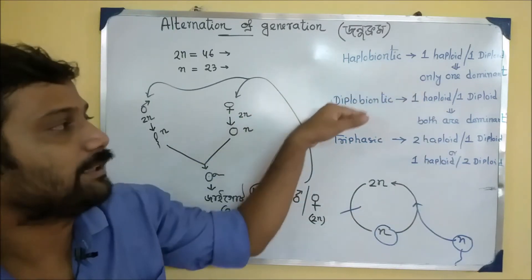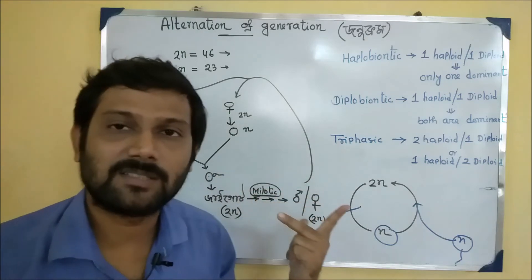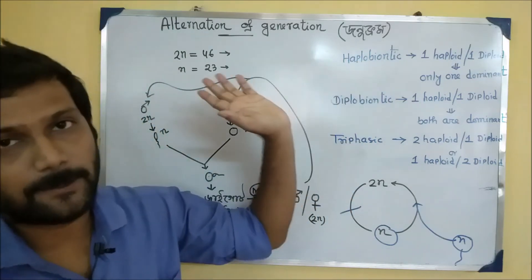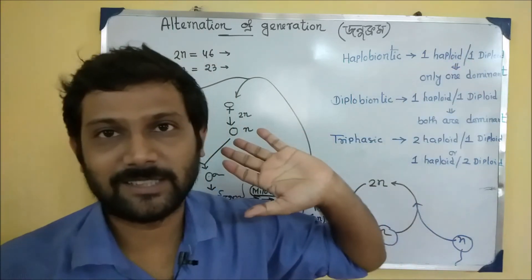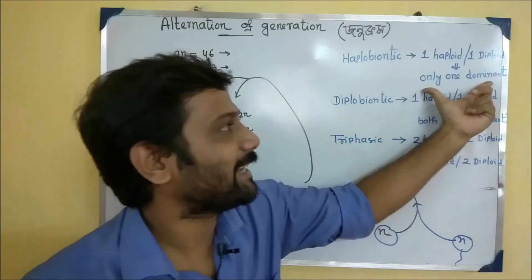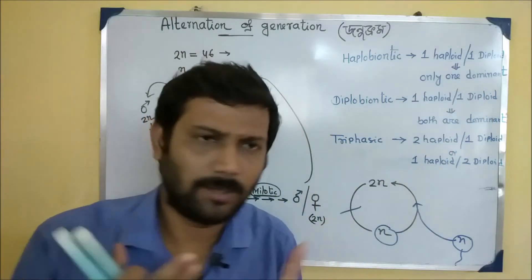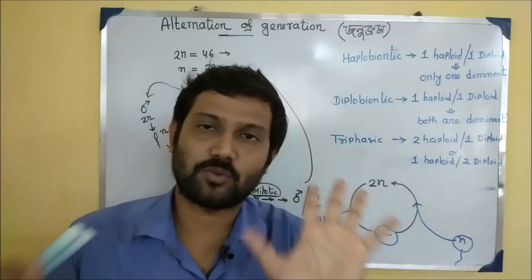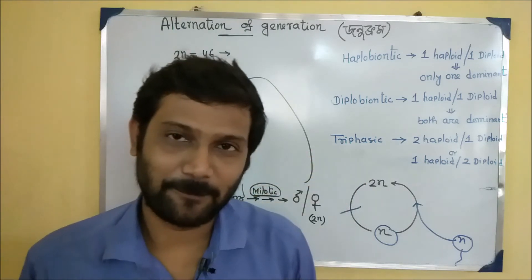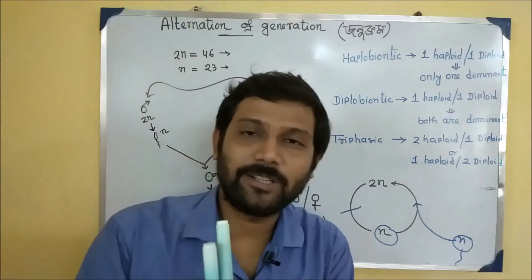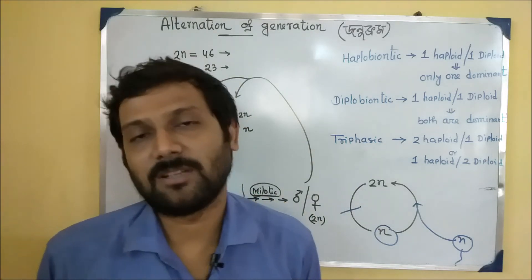You can say haplobiotic, diplobiotic, or triphasic. We have written these in English. Haplobiotic means haploid dominant; diplobiotic means diploid dominant. These are the distributed types of haploid and diploid life cycles.